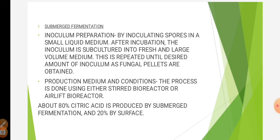In submerged fermentation, the first step is inoculum preparation. The spores of Aspergillus niger are first inoculated in a small liquid medium. After incubation for some time, the inoculum is subcultured into a fresh and large volume medium. This process is repeated until the desired amount of inoculum in the form of fungal pellets is achieved. It must be ensured that the pellets formed are small in size — that is, less than 1 mm in diameter — and should have fluffy centers.